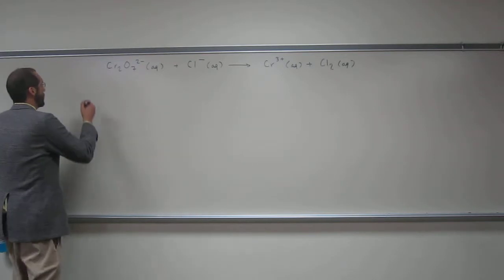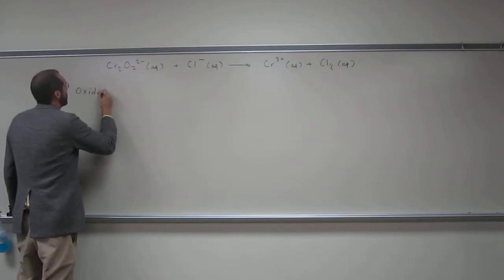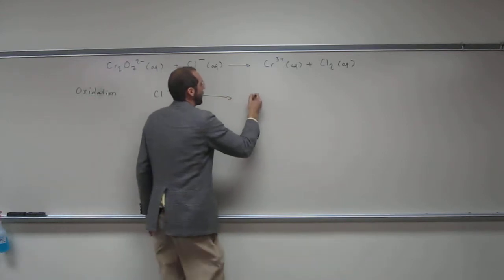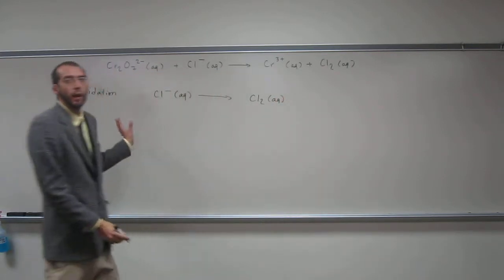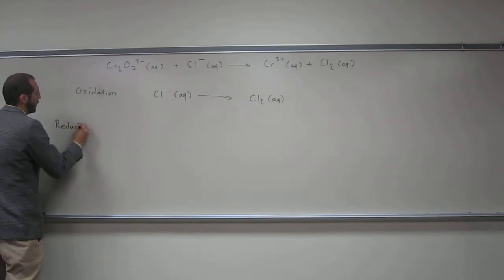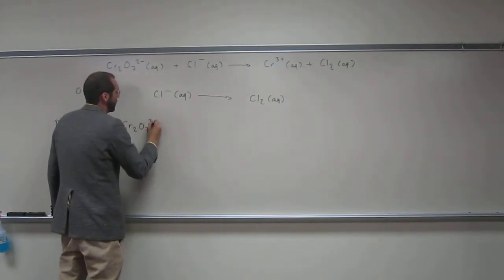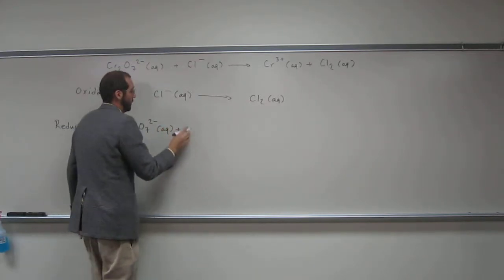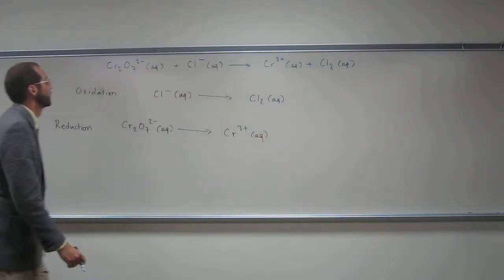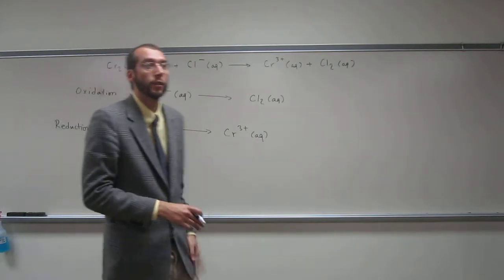We know which species got oxidized. So let's write the two half-reactions. The oxidation half-reaction would be Cl⁻(aq) goes to Cl₂(aq). Notice it's not balanced — we're not balancing it yet, we just want to write the two reactions. And the reduction reaction is the other portion: Cr₂O₇²⁻(aq) goes to Cr³⁺(aq). Hopefully you can see that neither one of those equations is balanced in terms of particles on either side.